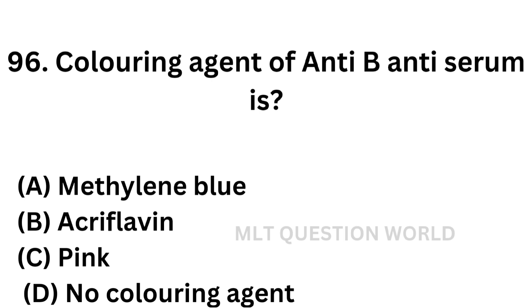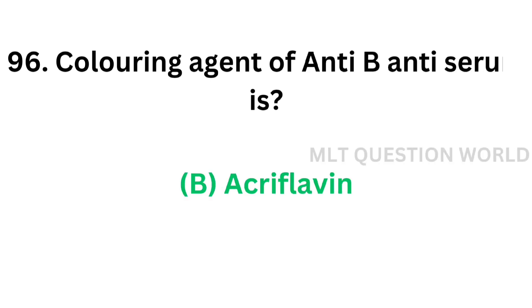Question number 96: Colouring agent of anti-B antiserum is. Option A: methylene blue. Option B: acriflavine. Option C: pink. Option D: no colouring agent. The colour of anti-B antiserum is yellow, so the colouring agent used is Option B, acriflavine. Acriflavine is the colouring agent of anti-B antiserum.